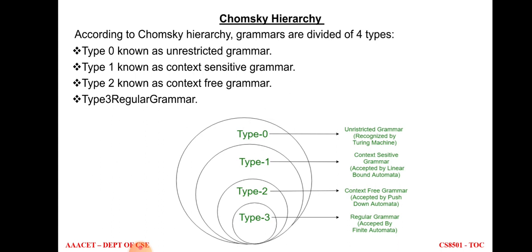According to the Chomsky hierarchy, grammars are divided into four types: Type 0, Type 1, Type 2, and Type 3. Type 0 is unrestricted grammar, Type 1 is context-sensitive grammar, Type 2 is context-free grammar, and Type 3 is regular grammar. In the hierarchy diagram, Type 0 includes all other types, Type 1 includes Type 2 and Type 3, and Type 2 includes Type 3.